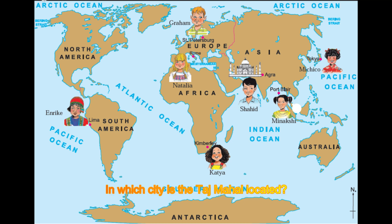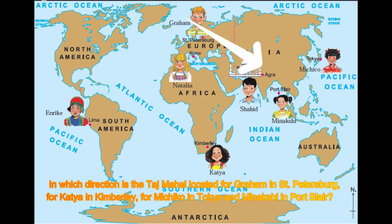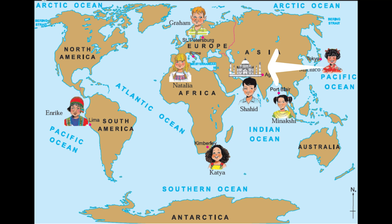Taj Mahal is located in Agra on the ancient continent. For Graham in St. Petersburg, Taj Mahal is in the southeast direction. For Katya in Kimberley, Taj Mahal is located in the northeast direction. For Michiko in Tokyo, Taj Mahal is in the southwest direction. And for Meenakshi, Taj Mahal is located in the northwest direction.